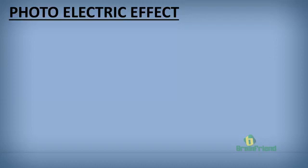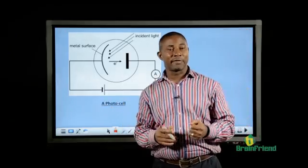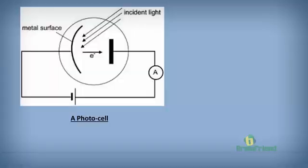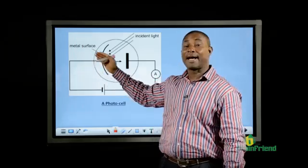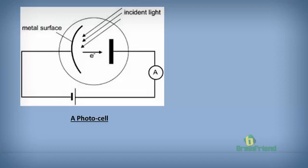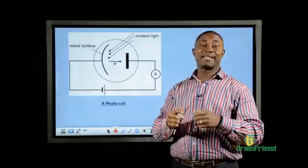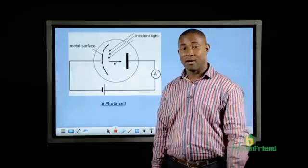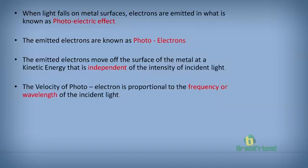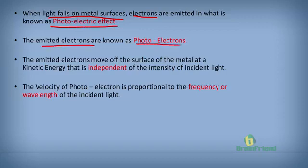Next, we look at the photoelectric effect. As seen in the diagram, we have a photocell where incident light comes in contact with a metal surface, causing a release of electrons. When light falls on a metal surface, electrons are emitted in what is called the photoelectric effect. The emitted electrons are also called photoelectrons.